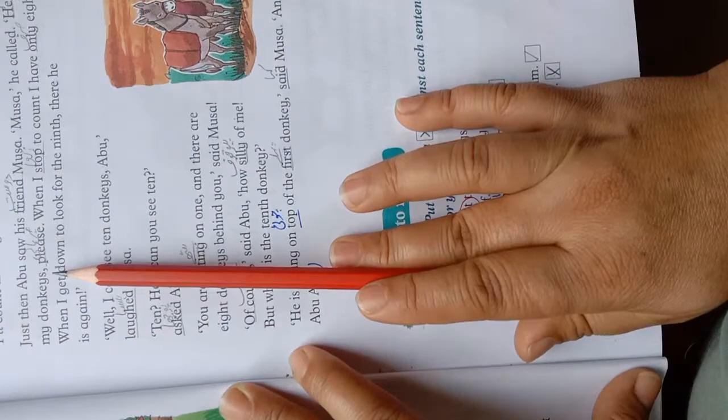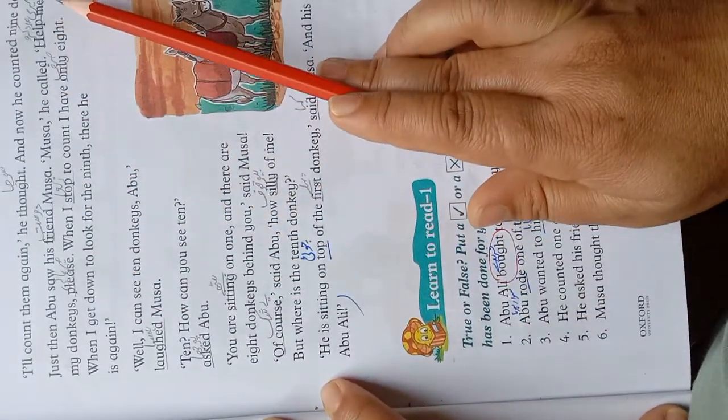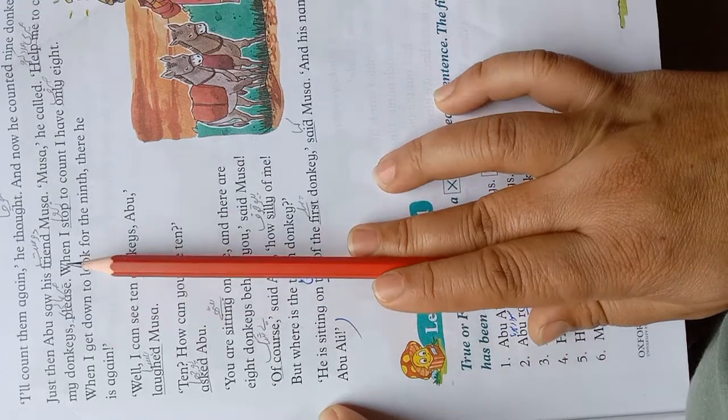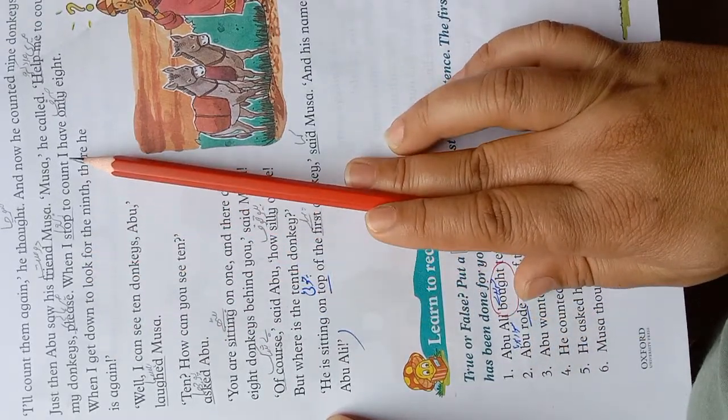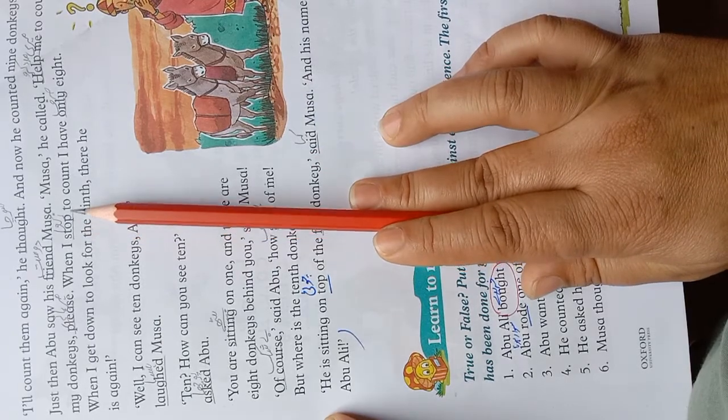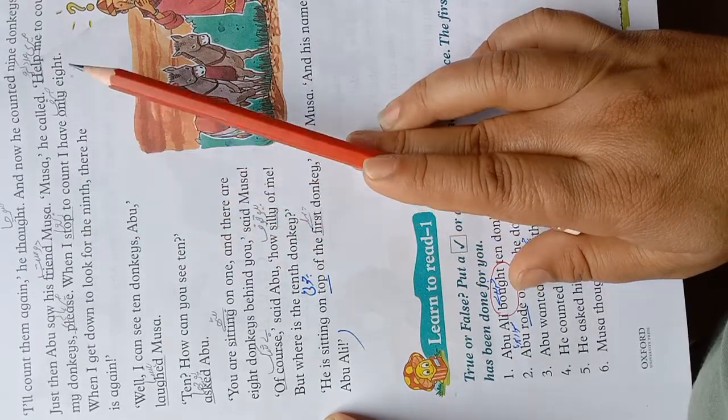Help me to count my donkeys. Meri madad karo gaddhon ko ginne mein. Please, meherbani karke. When I stop to count I have only eight. Jab main rukta hoon ginne ke liye sirf aath hote hain.